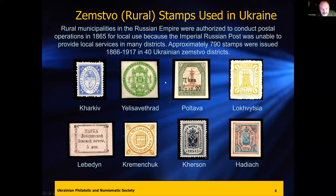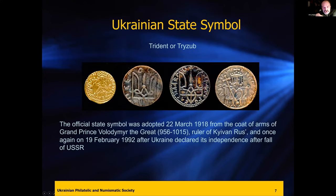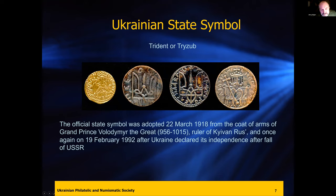A symbol you'll see on all Ukrainian stamps and currency in the last 100 years was initially adopted in 1918 from the state symbol of the medieval state Kievan Rus, which had its capital in Kyiv. In the late 900s, one of the Grand Princes, Volodymyr the Great, issued coins, and that's where the trident first appeared. A famous graphic artist in Ukraine adopted the trident from these coins and introduced it as a symbol for Ukraine. These are the first stamps that appeared after January 22nd — that's when the fourth declaration was issued stating that Ukraine is now a sovereign independent country.